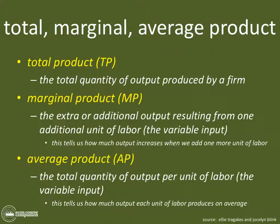So total, marginal, and average product — what does that mean? I want you to focus on the prefixes: total, marginal, and average. These terms repeat themselves. Total is simply the total of anything. Marginal is the addition of one more thing of whatever it is. And average is the total amount of those things divided by the number of those things.